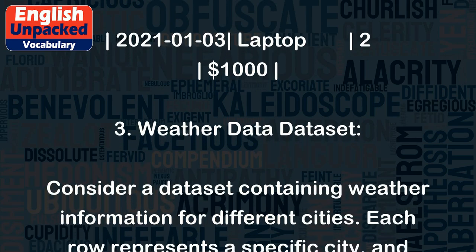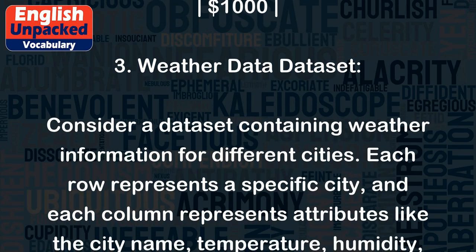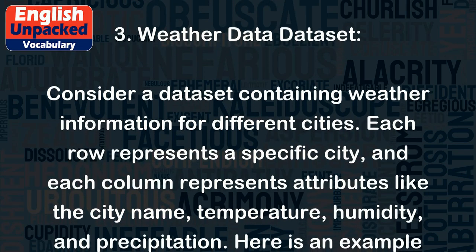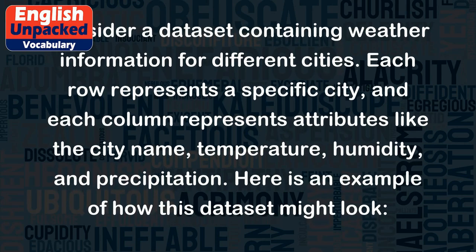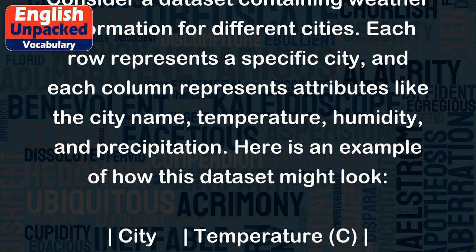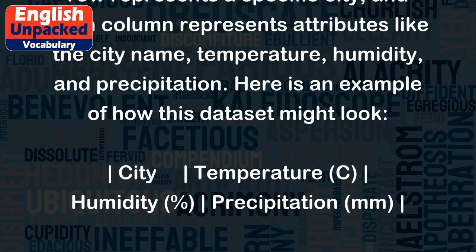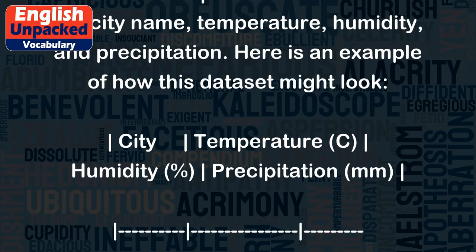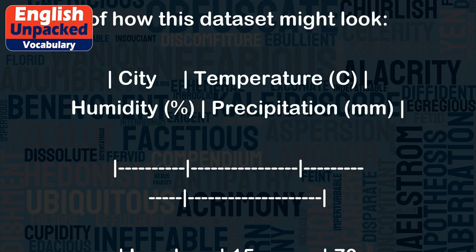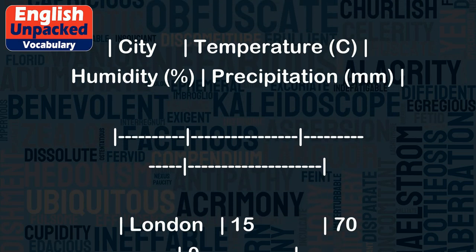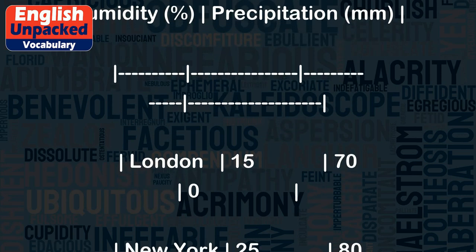3. Weather Data Set. Consider a data set containing weather information for different cities. Each row represents a specific city, and each column represents attributes like the city name, temperature (°C), humidity (%), and precipitation (mm).